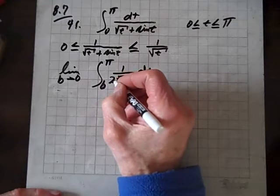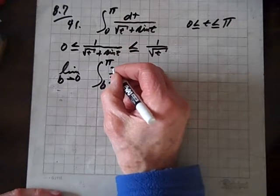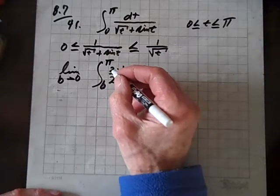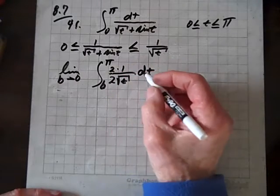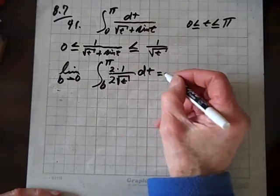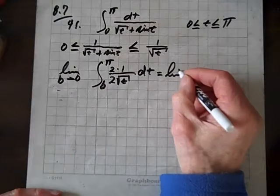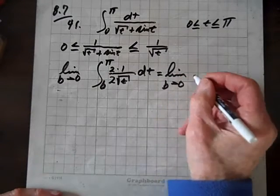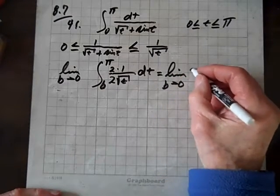Well, we'll get a 2 there. I'll just put 1 there, but I'll also have to multiply by 1 in the form of 2 over 2. So that's 1. And now this equals the limit as b goes to 0 of, let's see,